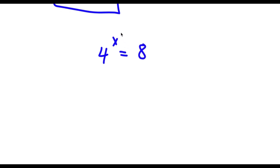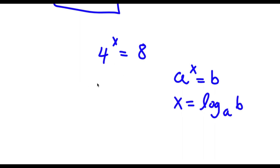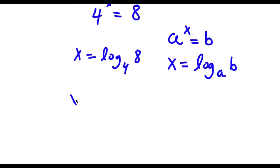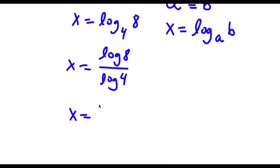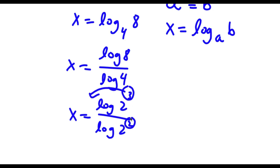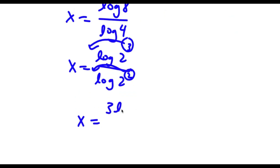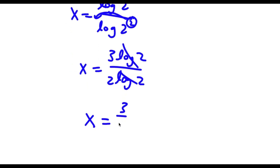Another way of solving this problem: I have 4 to the power of x equals 8. If a to the power of x equals b, then x equals log base a of b. So x equals log base 4 of 8, which is the same as log 8 over log 4. Now 8 is 2 to the power of 3 and 4 is 2 to the power of 2, so I have log of 2 cubed over log of 2 squared. Moving the exponents to the front, I get 3 log 2 over 2 log 2. The log 2 terms cancel out, leaving x equals 3 over 2.